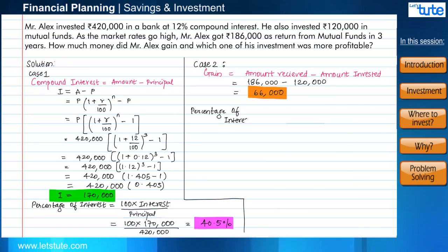So here the percentage of interest will be equal to 100 multiplied by interest or gain divided by the principal, which will come to 55%. Well, it is clearly visible that Mr. Alex's mutual funds investment was more profitable than the bank's investment.